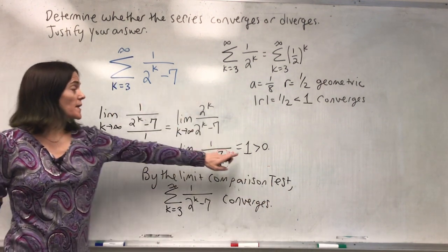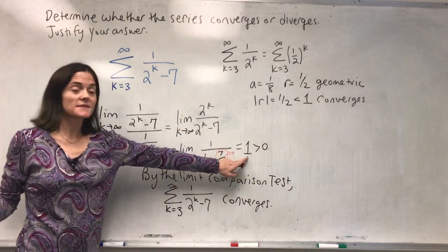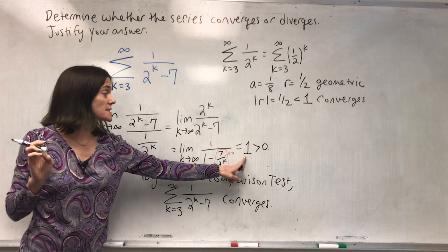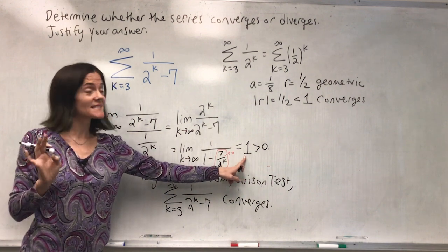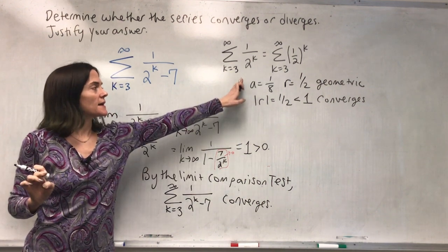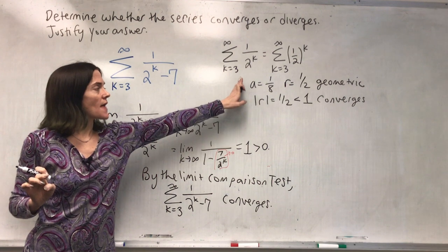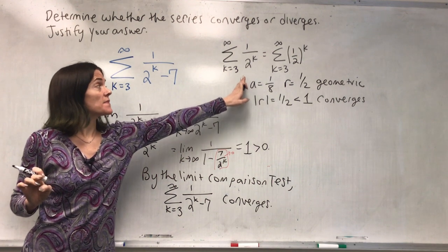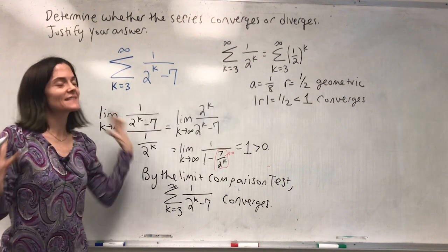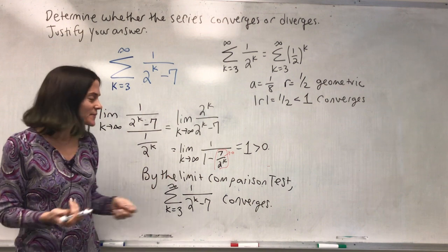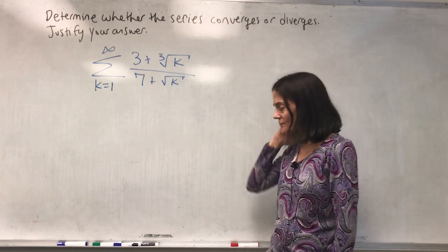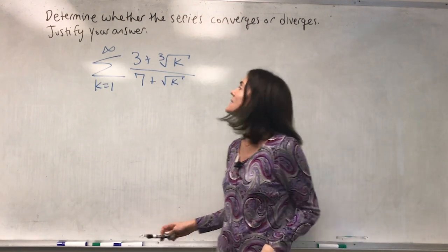By the limit comparison test, since the limit is strictly greater than zero and less than infinity, this series and the convergent geometric series have the same behavior. Therefore, the sum from k equals three to infinity of one over two to the k minus seven converges.